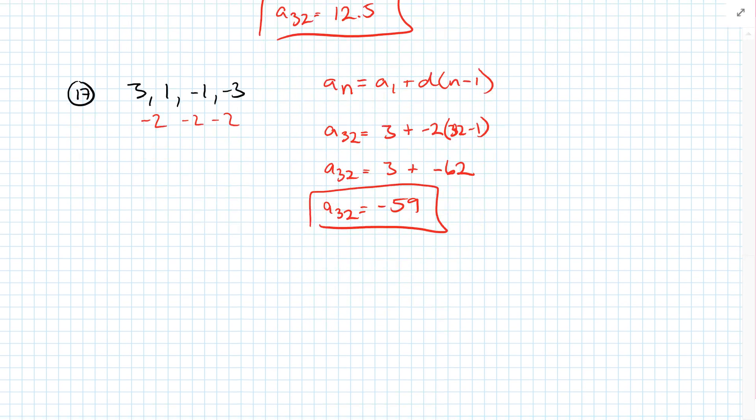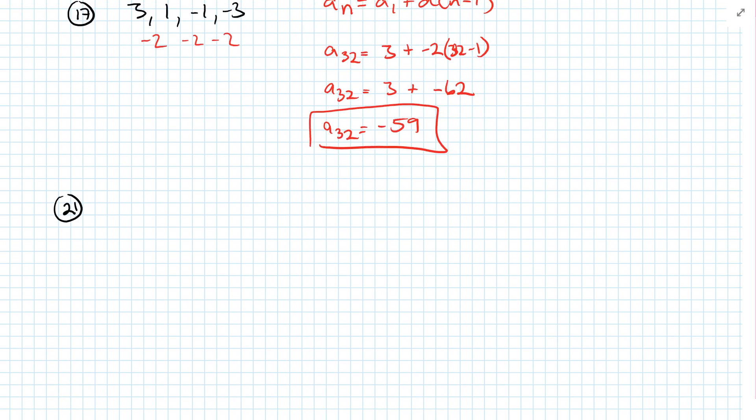Okay, every other odd. So 17, 19, 21. Find the missing term of the arithmetic sequence. So it goes negative 16, something, 1. Okay, well, we'll just use arithmetic mean. So you add those together, negative 16 plus 1 and divide by 2. So it's going to be negative 7.5.